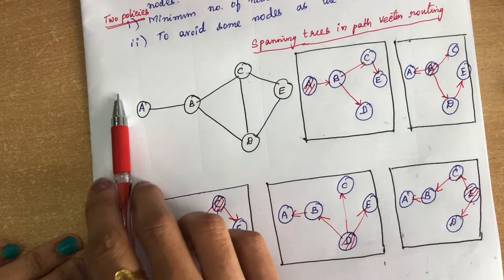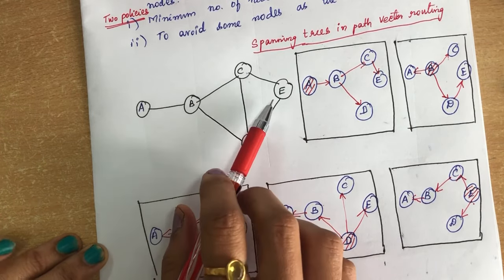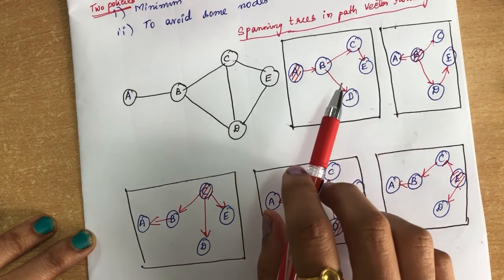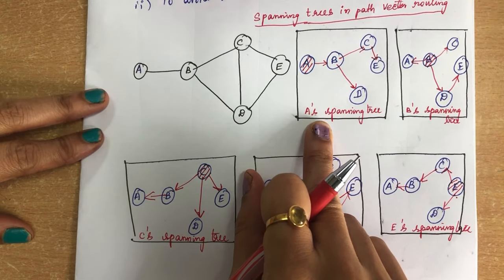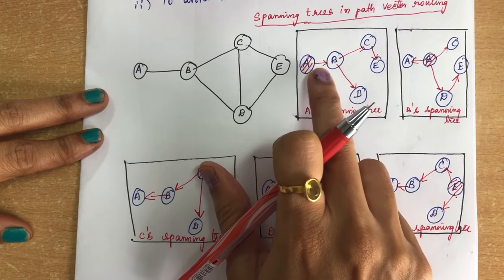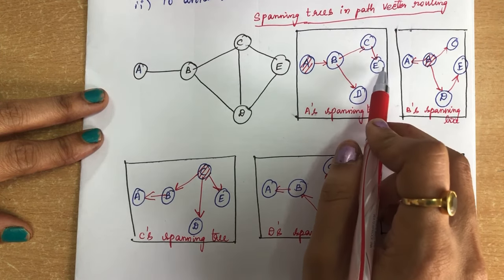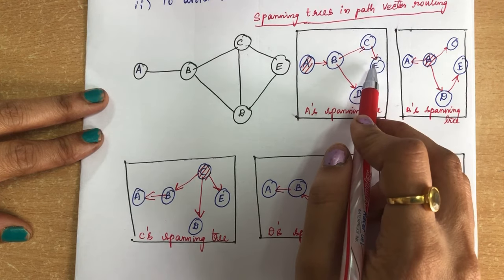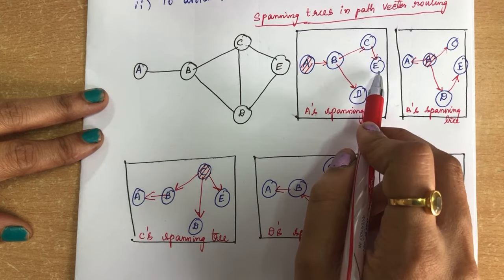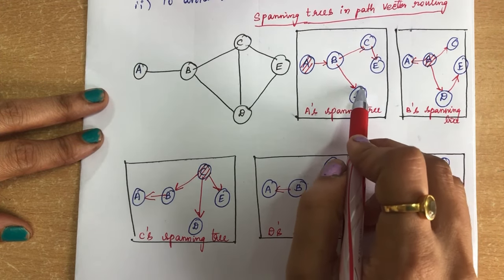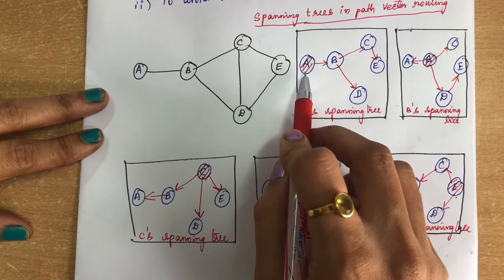We will see how to construct the spanning trees in path vector routing. Consider this particular network where you have nodes A, B, C, D, and E connected together. We are going to find out the spanning trees for every source node. For A's spanning tree, A is the source node and we are avoiding node D to communicate with E — whatever communication has to be sent to E will be sent only through C, not through D.